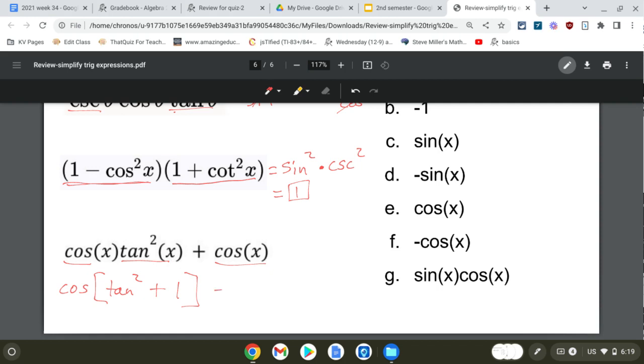So this is going to become cosine times secant squared, which is cosine... whoop, I lost it.